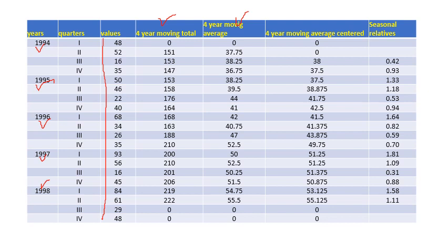Now moving average total—I am not going into the detail of this moving average because I have already explained how to obtain moving average. You know this column is the centered moving average. Now to obtain the seasonal relative, you have to divide this value by this value. Similarly, 35 divided by 37.5, we get this value. Now 50 divided by 37.5, and we get this value, and so on.